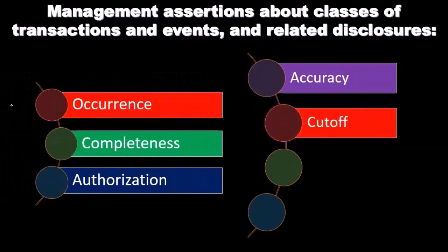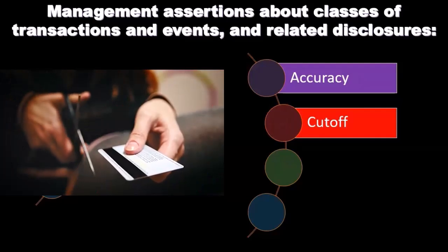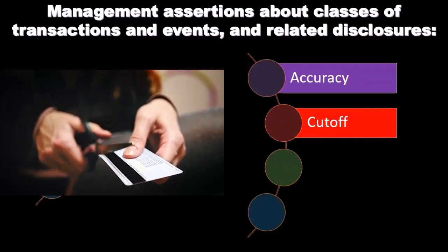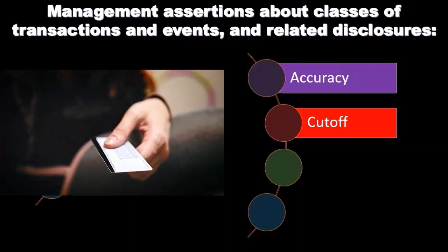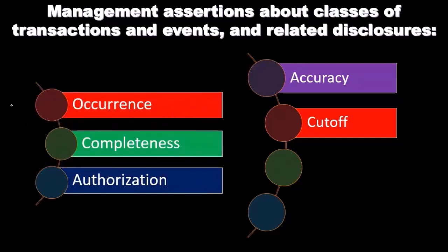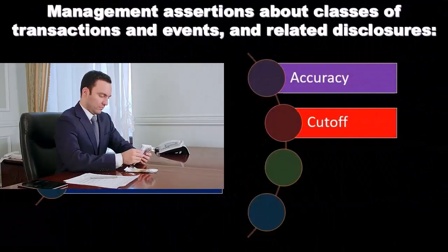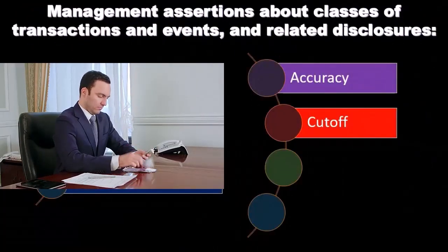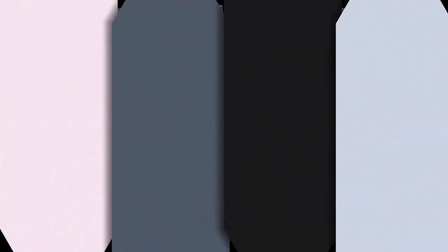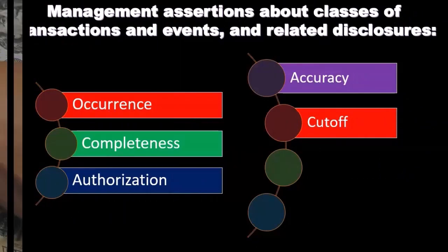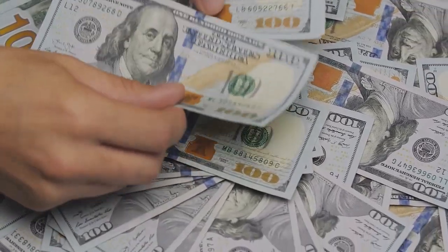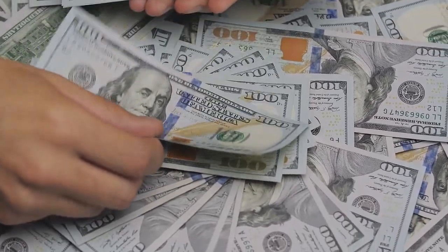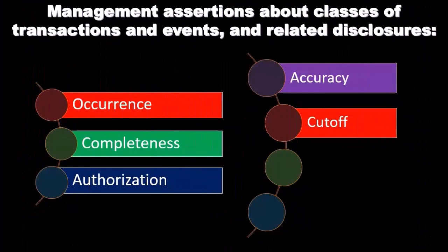Cutoff: transactions and events have been recorded in the correct accounting period. You can think of cutoff in terms of the adjusting entries at the end of the time period — when thinking about timing differences, is something recorded in the proper time period? Should revenue be included in the current year or the following year? Errors and fraud can occur by recording revenues and expenses in the wrong period, so we check cutoffs at the beginning and end of the year.